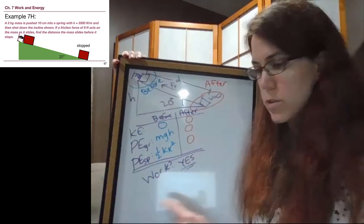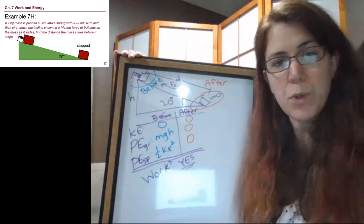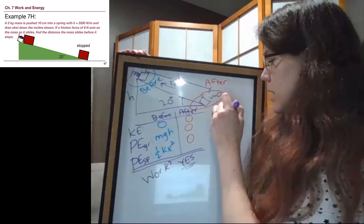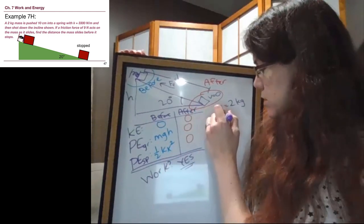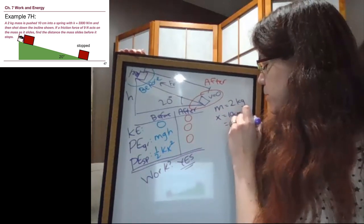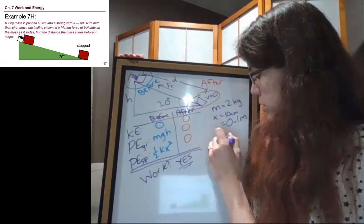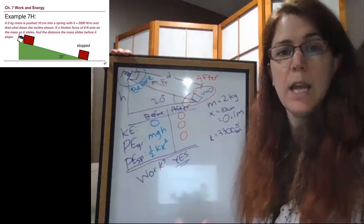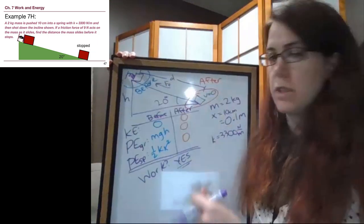Before we get down to that work term, now we can go back and look at what information we have. As we read through the problem, we can write stuff down. A 2 kilogram mass, so m equals 2 kilograms, is pushed 10 centimeters, so that's the compression of the spring, 10 centimeters, but we know that has to be 0.1 meters to be used in our equations, into a spring with k equals 3300 newtons per meter, that's the spring constant, and it's shot down the incline shown, so we release the ramp and it causes it to move.